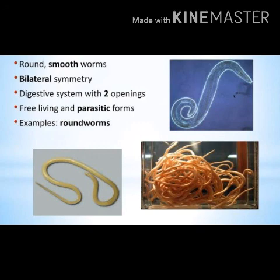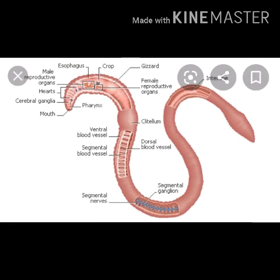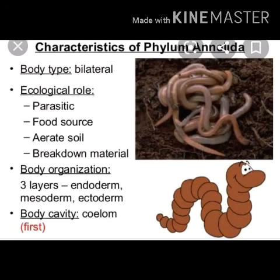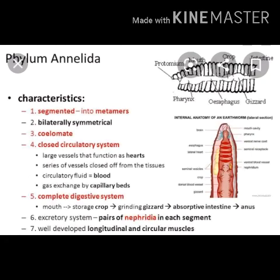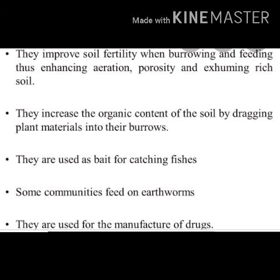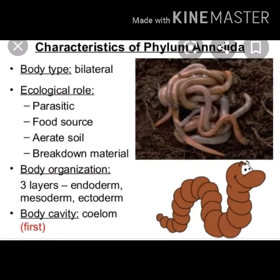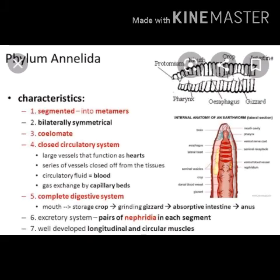Phylum Annelida are the segmented or ringed worms. Earthworm and Nereis are examples. The body of annelid worms is cylindrical and divided into ring-like segments. Annelid worms have a well-developed digestive system with the alimentary canal open at both ends — mouth and anus. They have a true body cavity, the coelom.